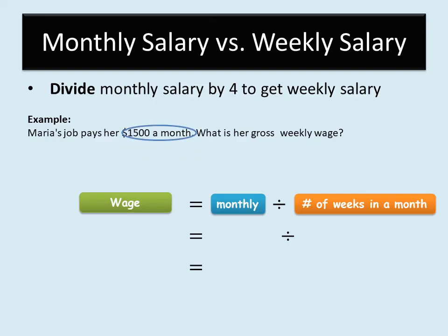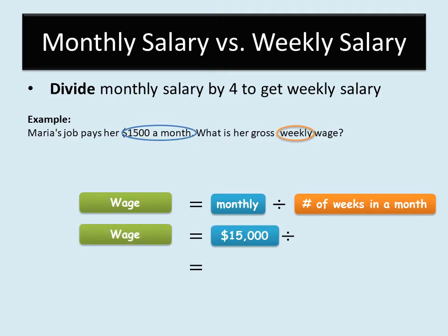The formula: take the monthly salary and divide it by the number of weeks in the month. The monthly salary is $1,500, and since we want the weekly wage we divide by 4. So $1,500 ÷ 4 = $375. That means every week Maria will earn $375, and at the end of four weeks that will add up to $1,500 for the month.